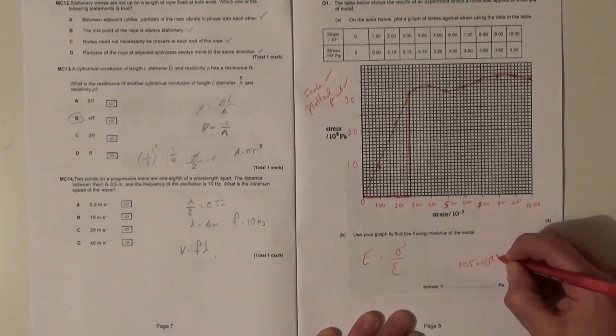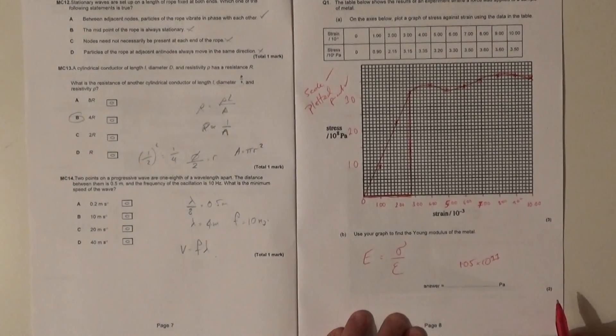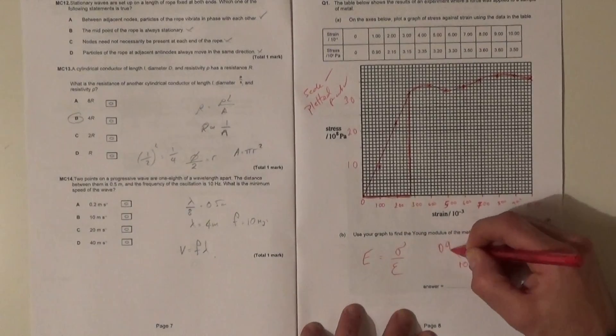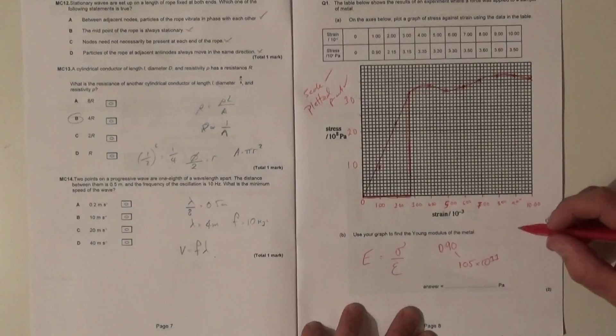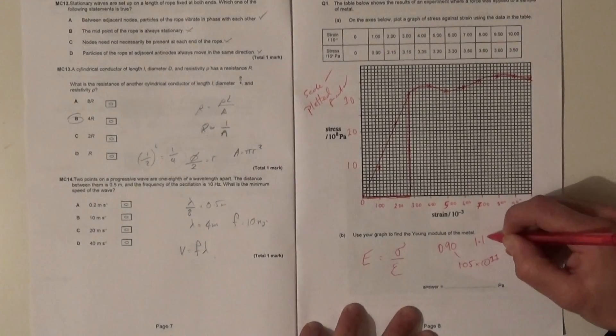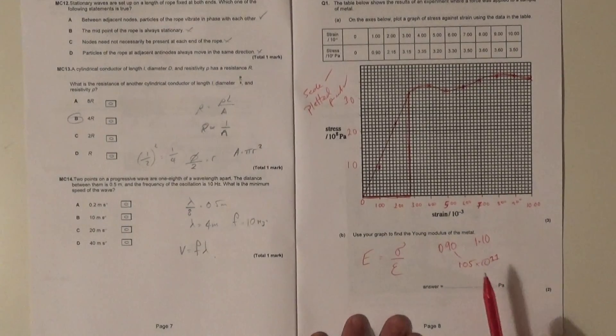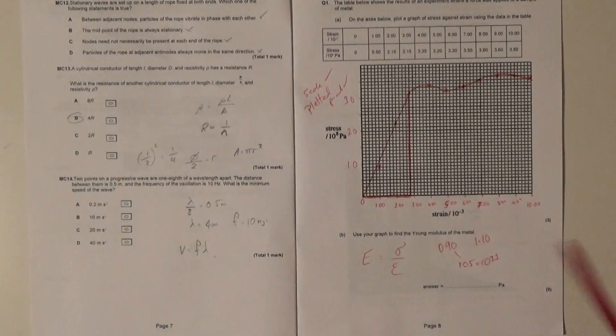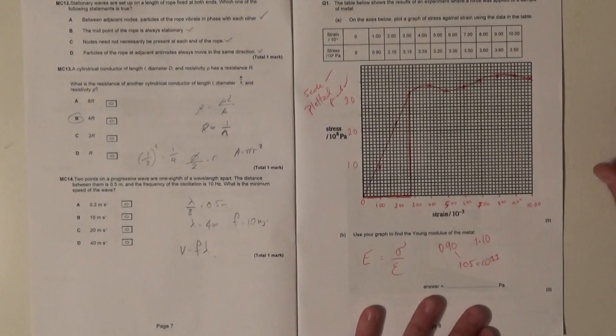And the range that's acceptable for this mark is the answer comes out to 1.05 times 10 to the 11, and it's got a plus or minus. Basically this value for 1.05 is okay from 0.90 all the way up to 1.1 for the Young's modulus.